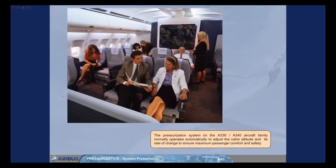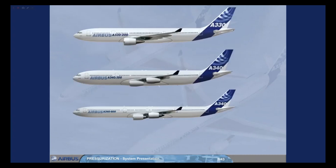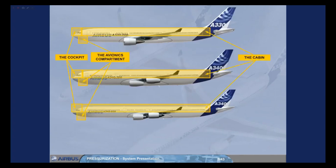The pressurization system on the A330-A340 aircraft family normally operates automatically to adjust the cabin altitude and its rate of change to ensure maximum passenger comfort and safety. The pressurized areas are the cockpit, the avionics compartment, the cabin, and the cargo compartments.